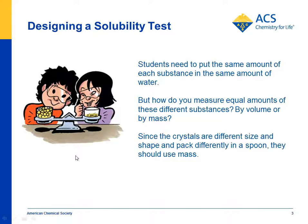We take the same volume of cereal balls and put them in two separate containers. In one container we just use the spheres as they are. In the other, we crush them in a plastic bag and pour them into a cup. Students can see that even though it's the same amount of stuff, they look very different — volume can be deceiving. So they realize they should use mass.